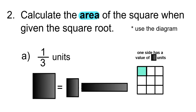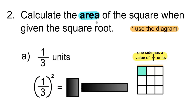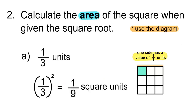Calculate the area of the square when given the square root. Use the diagram to help you solve. One side of the square will have a value of 1 out of 3 units, so 1 third units. That's the square root. The area is going to be side squared, so it's going to be 1 third squared, and this will have a value of 1 out of 9 units.